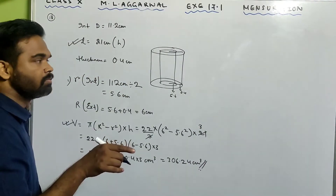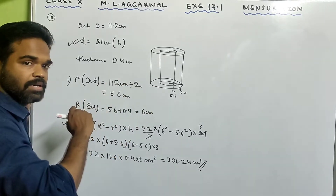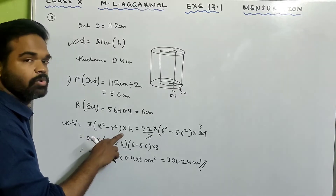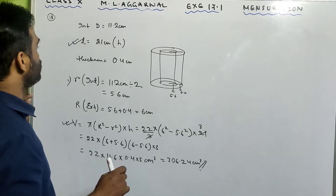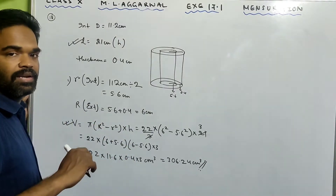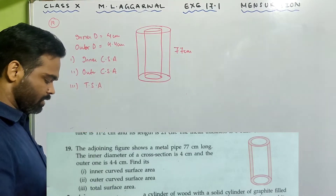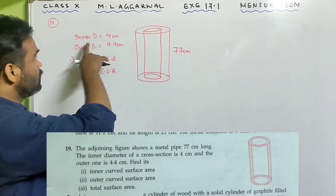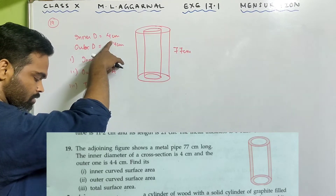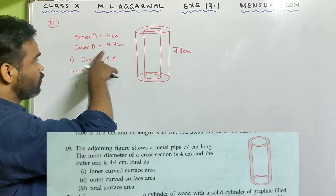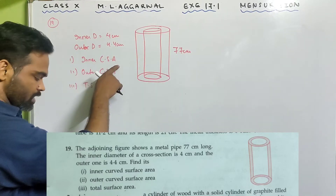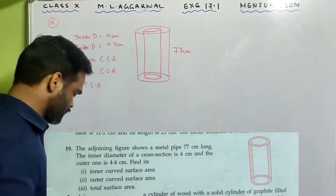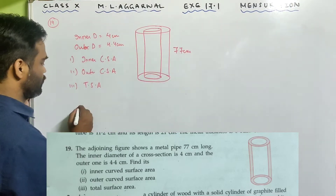Just remember the formula for volume of a hollow cylinder: π(R² − r²) × h. Now look at sum number 19. The adjoining figure shows a metal pipe 77 centimeter long. The inner diameter is 4 centimeter and the outer diameter is 4.4 centimeter. Find its inner curved surface area, outer curved surface area, and total surface area.